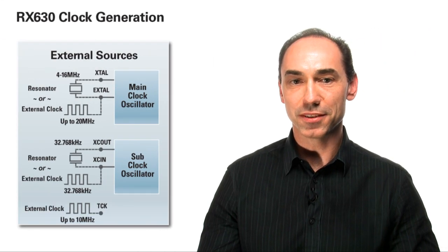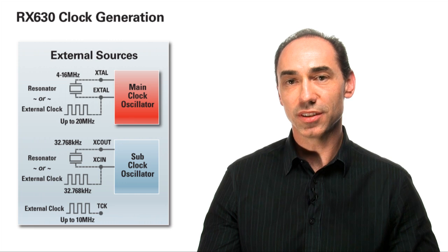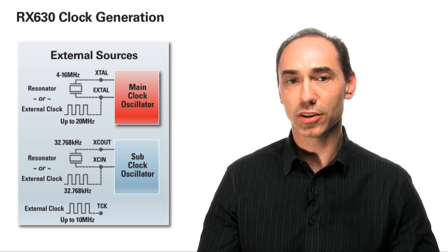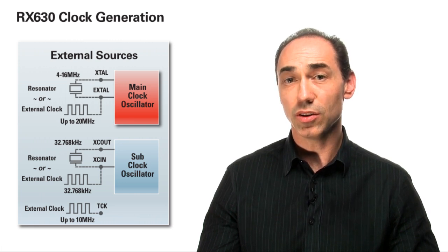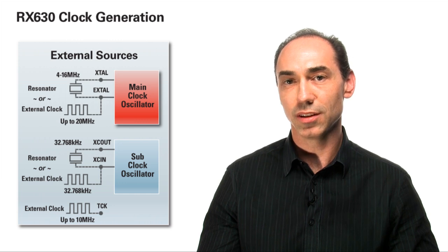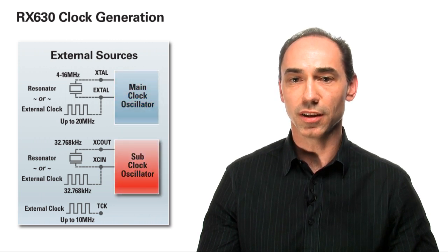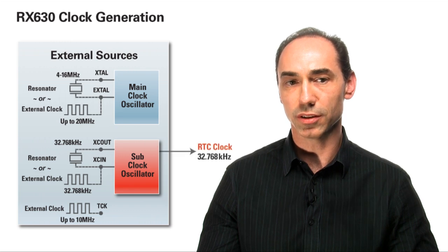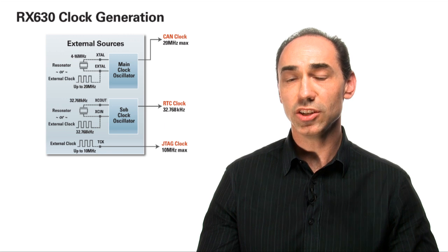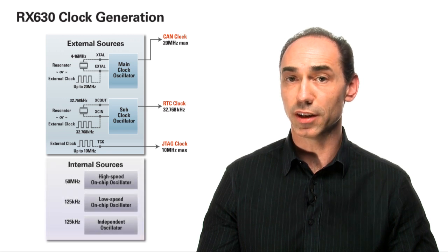The RX 630 has a main clock oscillator, which uses an external 4 to 16 MHz crystal or resonator, and can also take in an external clock signal up to 20 MHz. There is a second sub-clock oscillator, which operates at 32 kHz, and is optimized for low power operation. In addition, there are three internal on-chip oscillators.